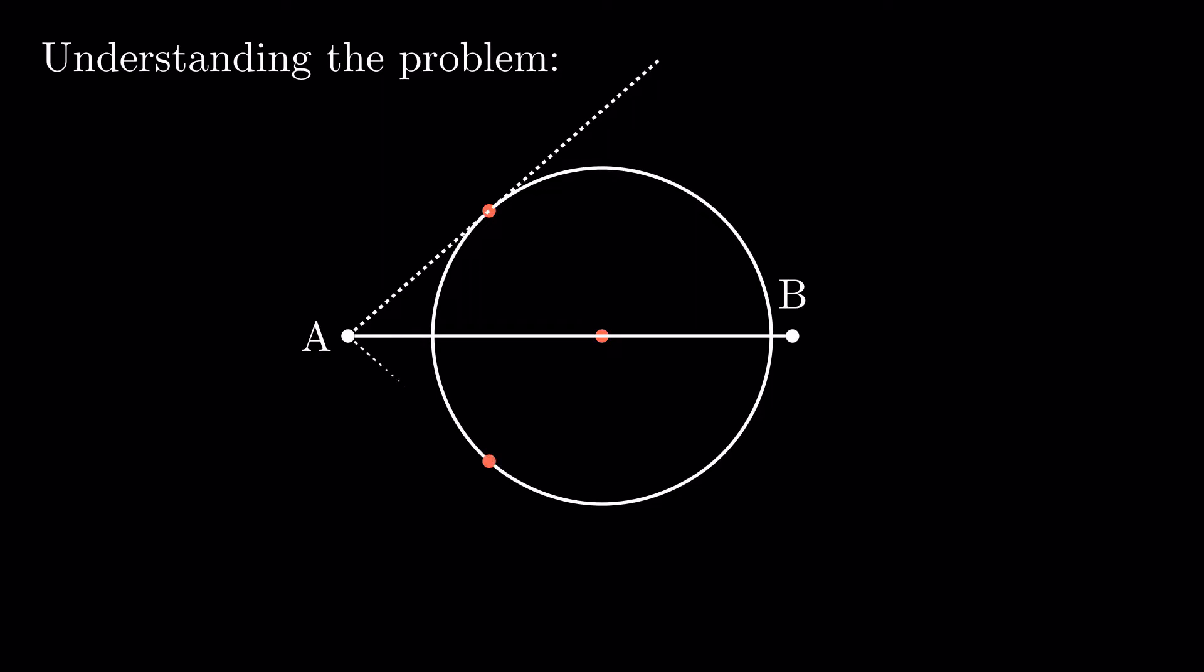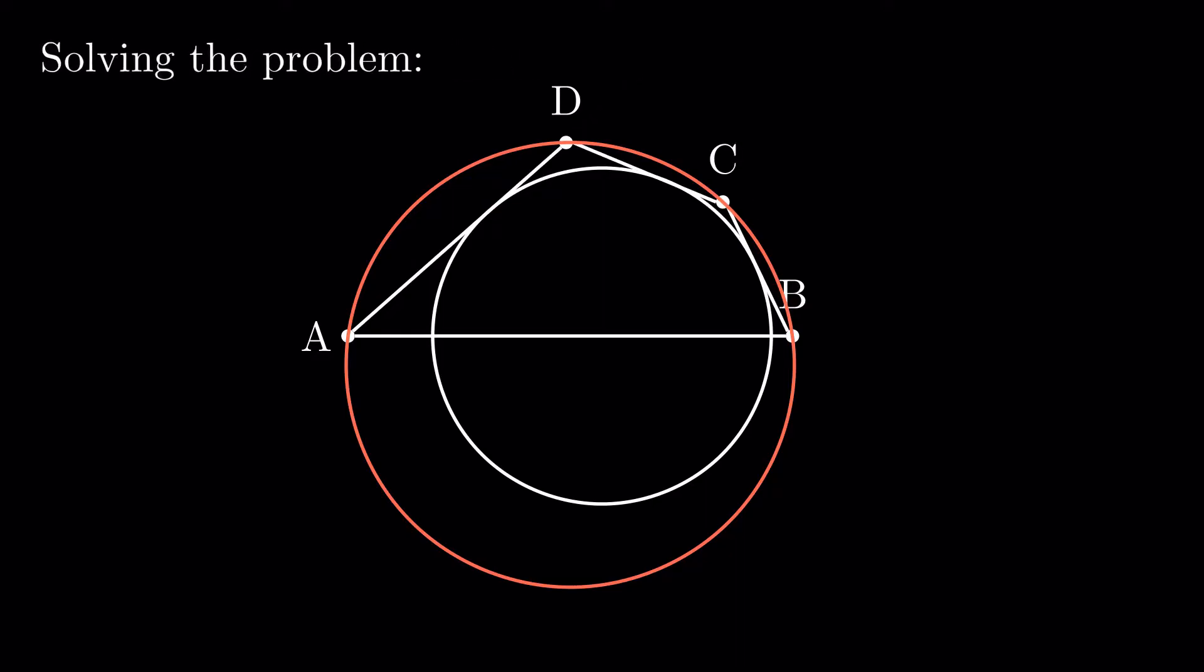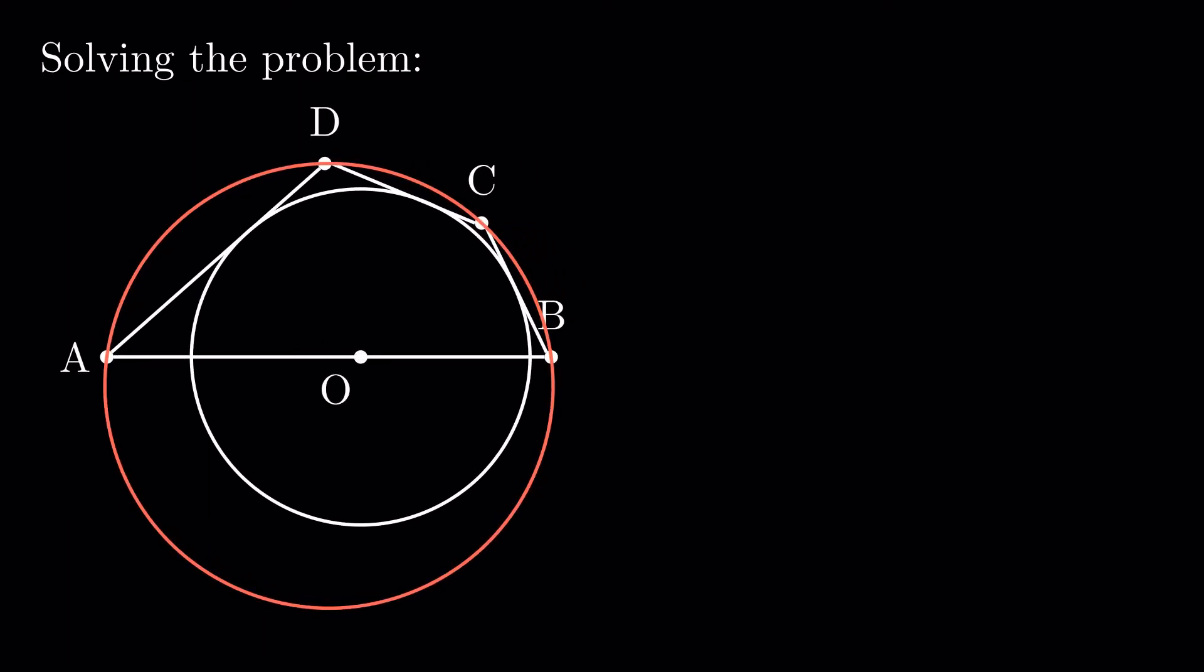We add the two tangents from each point. D has to be on one of A's tangents and C on one of B's. Without loss of generality, let's assume they are both on the upper half. Move them around until we arrive at the inscriptible quadrilateral ABCD. Armed with these properties, let's start the proof.